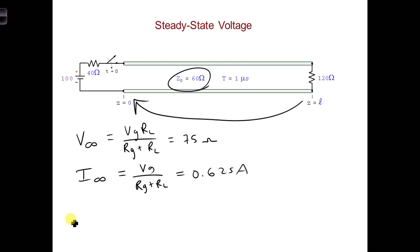We could have also found the steady-state current from the steady-state voltage by taking 75 volts. I don't know why I put ohms there. That should be volts. 75 volts over 120 ohms, and we get the same number.